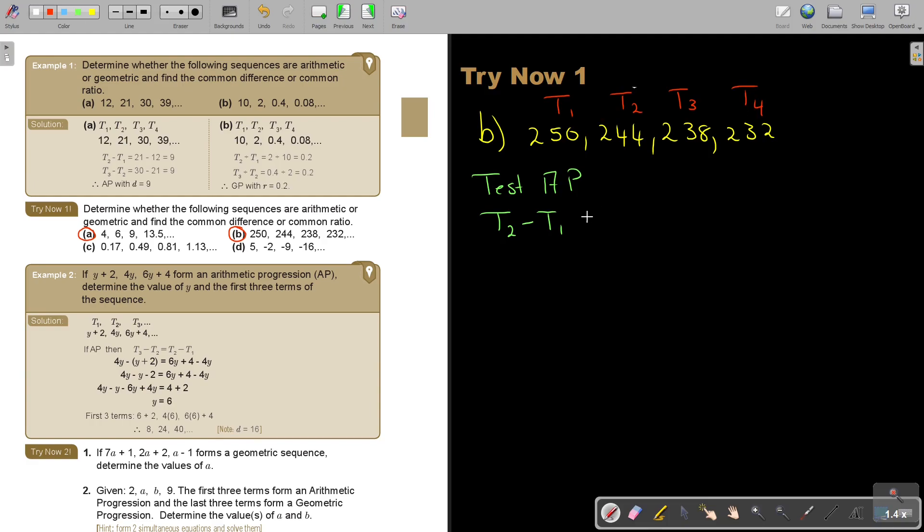So, it's equal to T3 minus T2. So, it's 244 minus 250, is equal to 238 minus 244. So, therefore, if you subtract, you'll get negative 6 equals negative 6. So, therefore, it is an AP.